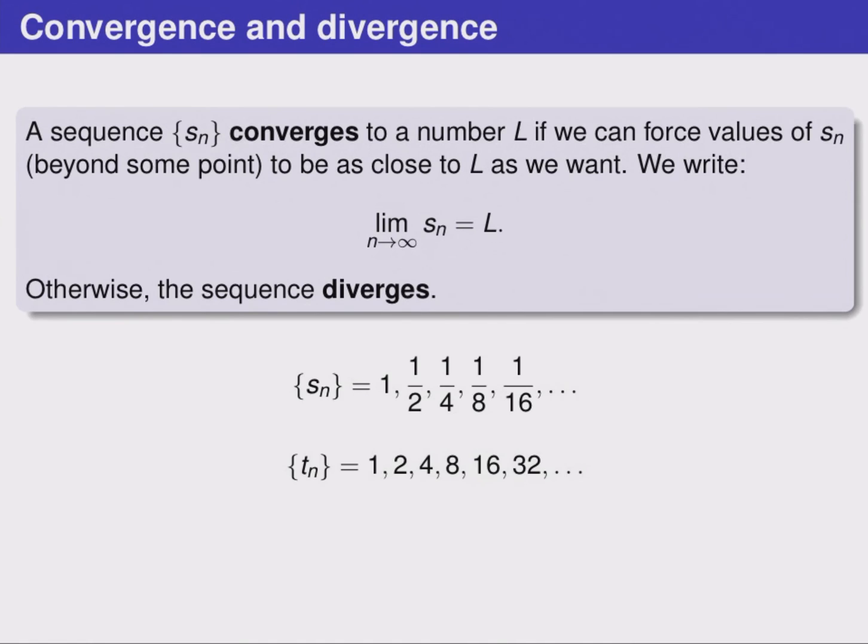On the other hand, this sequence, T sub n, goes to infinity as n gets larger and larger, and so we would say this sequence diverges. But there's many ways that a sequence can diverge. For example, the sequence U sub n simply bounces back and forth between 1 and 0, 1 and 0. Even though this doesn't go to infinity, it still diverges because the sequence never settles down and gets as close as we want to any one number. It doesn't get close and stay close to any number, but it bounces back and forth.